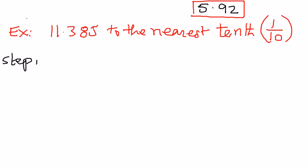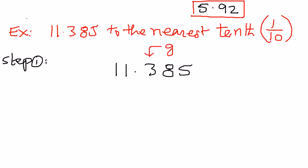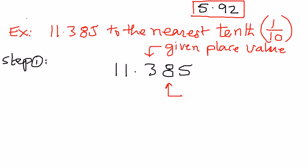Step number 1: write the number down as given — 11.385. We want to round it to the nearest tenths place. The tenths place is the digit just to the right of the decimal point; this is the given place value. Now we're going to look at the number just to the right of 3, and make a decision: if that number is greater than 5, we add 1 to the given place value and make the rest of the digits equal to 0.